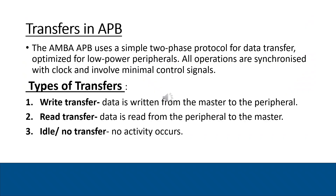So far we have discussed most of the important signals used in the APB protocol. Now it's time to dive into how actual data transfers happen in APB. The AMBA APB protocol uses a simple two-phase transfer mechanism optimized for low power and low complexity peripherals, with all operations fully synchronized. There are three types of transfers: write transfer — data written from master to peripheral; read transfer — data read from peripheral to master; and idle transfer — no activity, bus remains in default state.